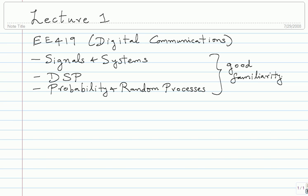This course will go way over your head if those concepts are not clear. For instance, if you don't know enough about Gaussian random variables, you're going to be in big trouble in this class. In DSP, Z-transforms and DTFT should be very clear to you. Signals and Systems in general you should know.